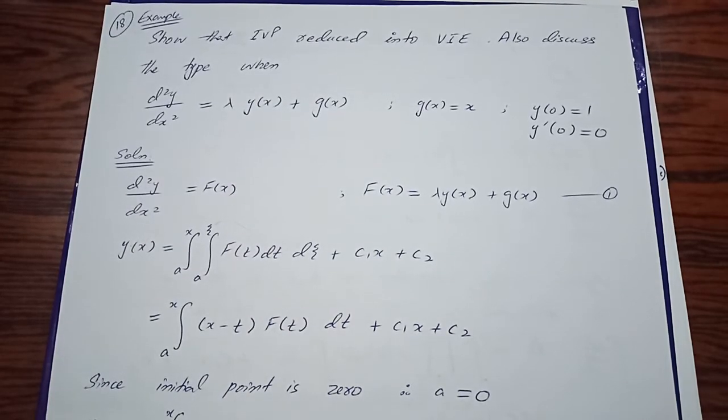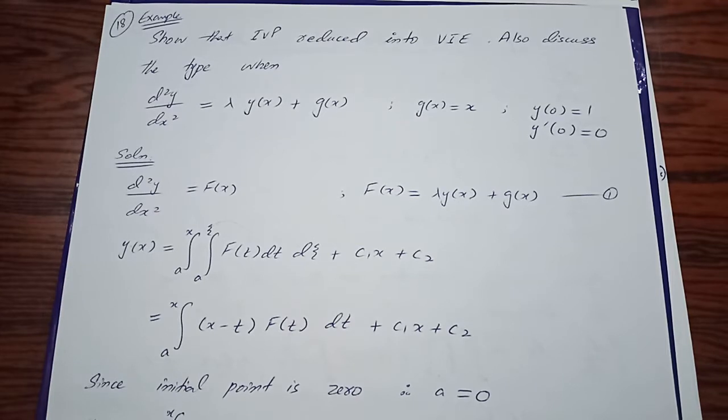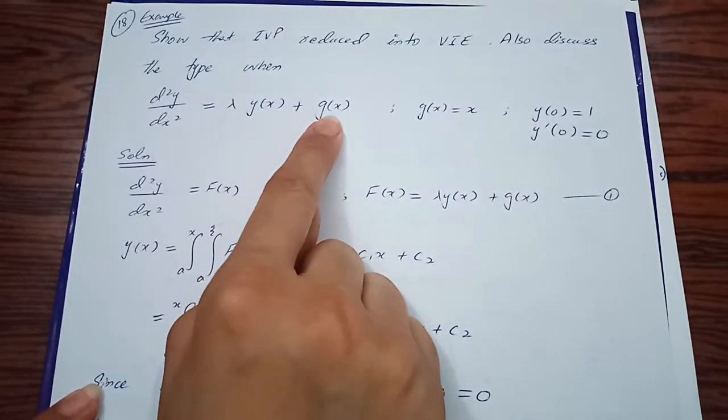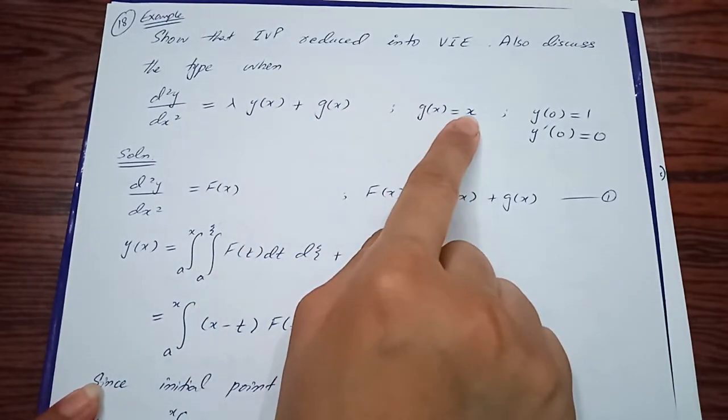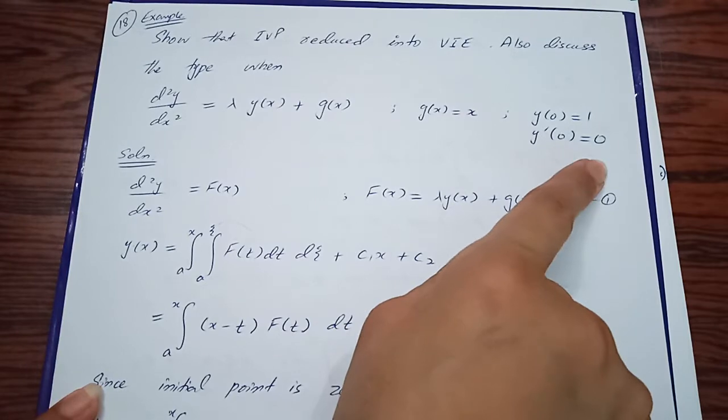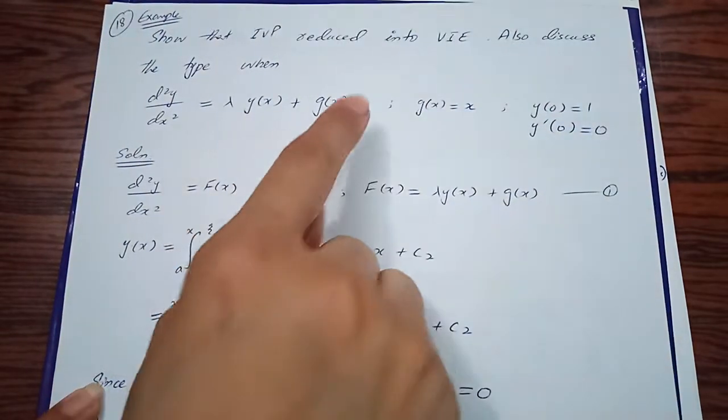Assalamu alaikum students. We are solving an initial value problem by converting it into a Volterra integral equation, and at the end we'll discuss its type. The differential equation is d²y/dx² + λy(x) + g(x), where g(x) = x, with initial conditions y(0) = 1 and y'(0) = 0.